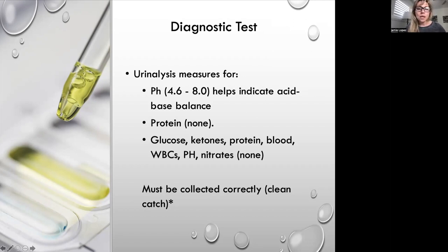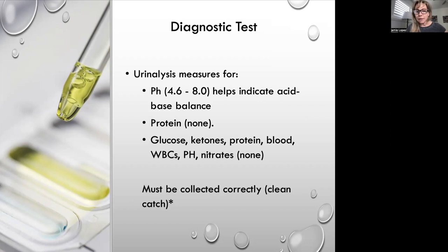In urinalysis, we look for acid-base balance. There should be no protein — if there is, we're concerned about kidney problems. There should be no glucose, ketones, blood, or white blood cells in the urine; if there are, further investigation is needed. For invasive tests such as a cystoscopy — looking inside the bladder with a camera — our main nursing responsibility is to explain the procedure to the patient and obtain proper consent.